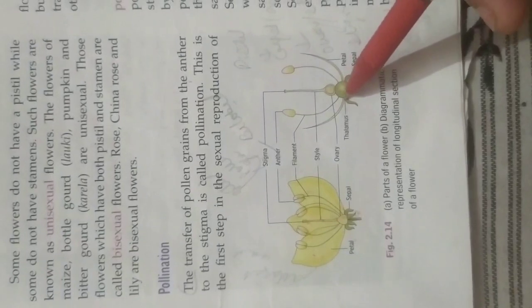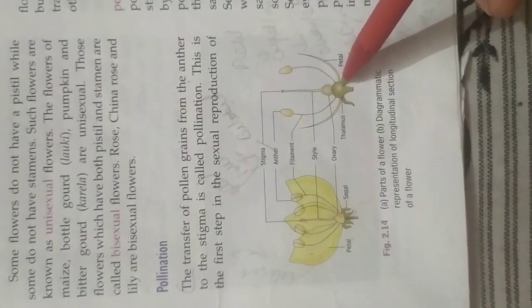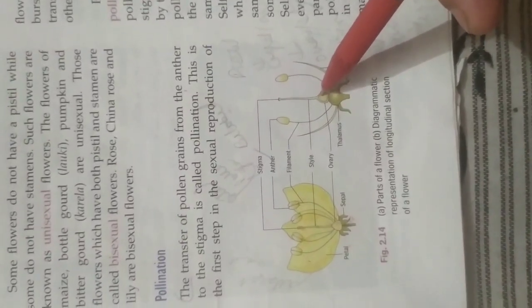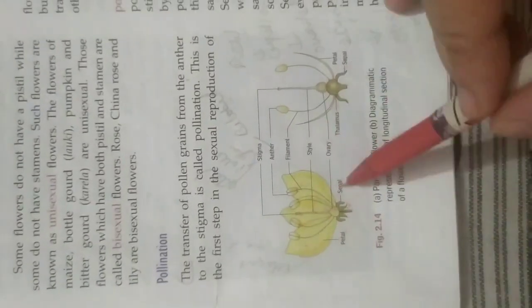And this is the thalamus. Some of the fruits rise from the thalamus only. Otherwise we know that after pollination the ovary changes into fruit. But some fruits such as the apple grows from the thalamus only. So this is the basic structure of flower.